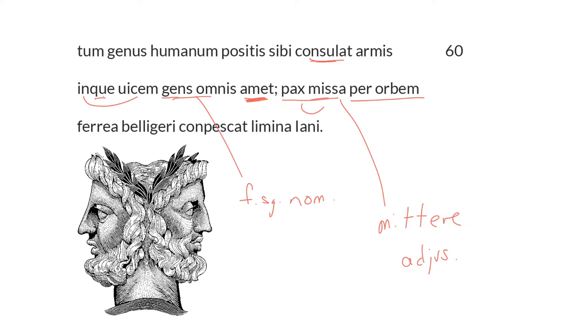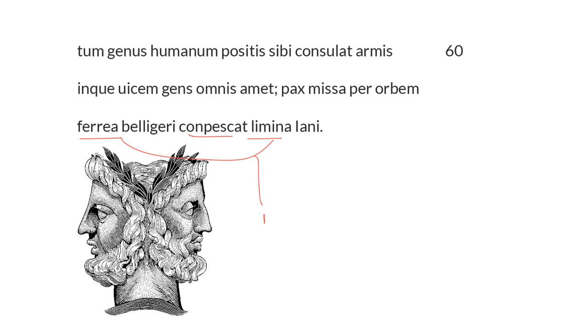let it conpescat. Let it compress or close or hold fast. This is from con or com, pesco, compescare, third conjugation. So the presence of the a there tells us it too is subjunctive. Then when peace has been dispatched throughout the whole world, let it close tight, conpescat. Let it control the ferrea limina, the iron doorsteps, or the iron thresholds. This is the object of conpescat, in the neuter plural and accusative.